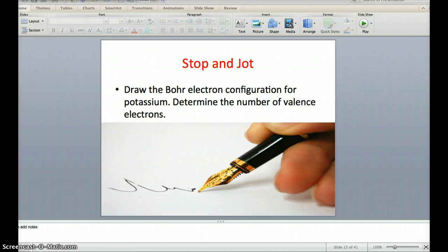For this last example, we're going to get a little stop and jot going and draw the Bohr electron configuration for potassium. We're going to use that to determine the number of valence electrons made available for bonding.